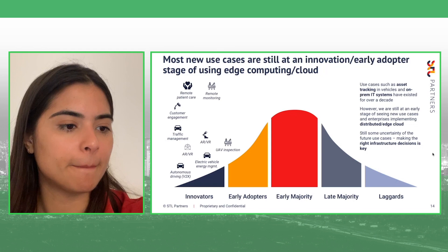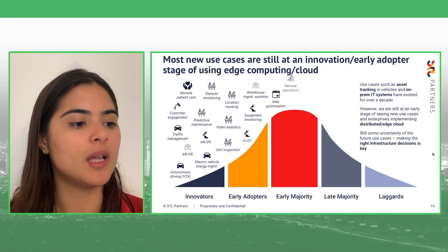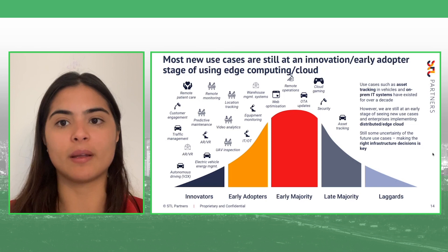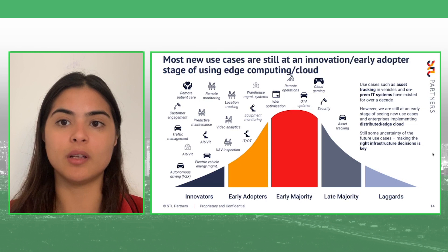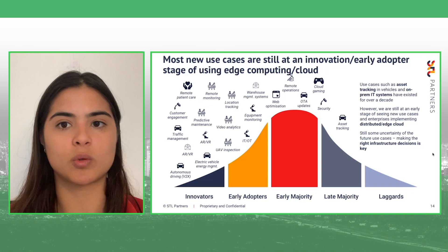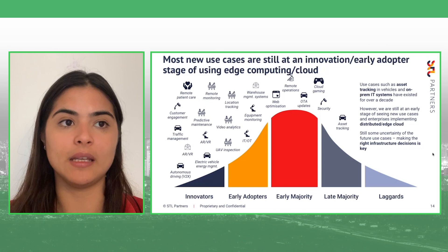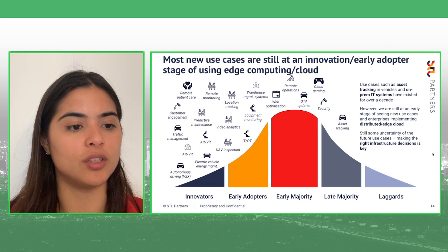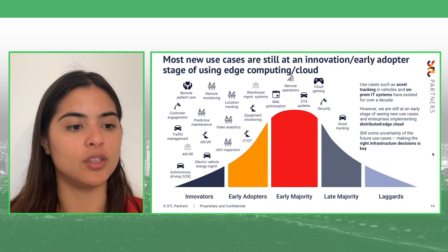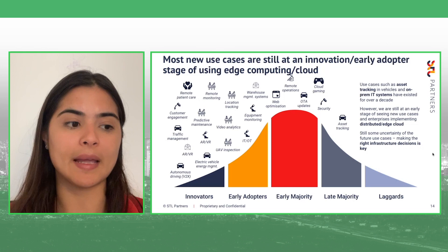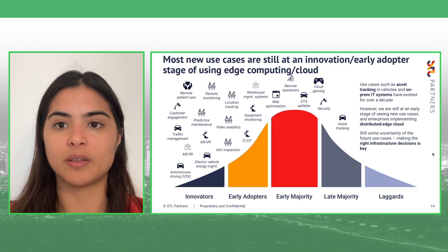Mapping use cases on the maturity spectrum, some things are at an early stage — like autonomous driving, traffic management, and AR/VR-heavy custom engagement applications. Other use cases are more advanced — for example, asset tracking has used some level of edge compute in the vehicle for a long time, and cloud gaming is starting to be deployed in regional data centers, which are a form of edge. Things are moving quickly, but sometimes other technologies in IoT or AR/VR need to advance to push things further along.